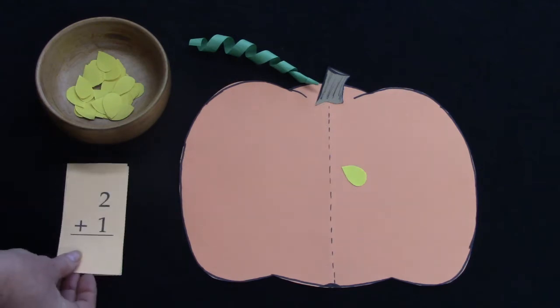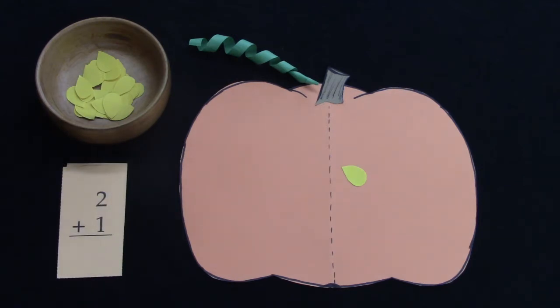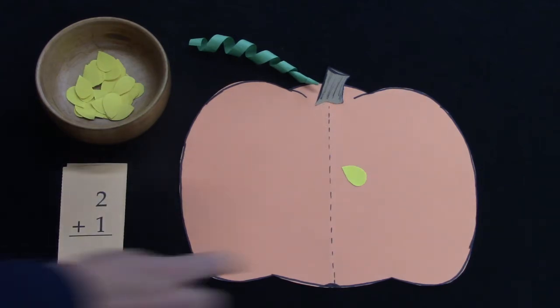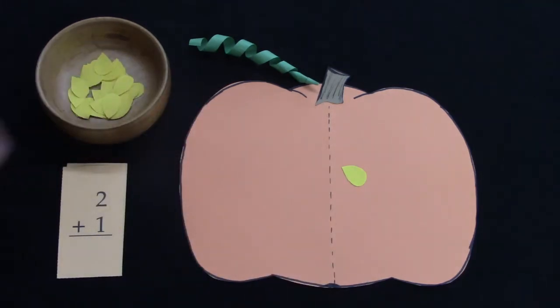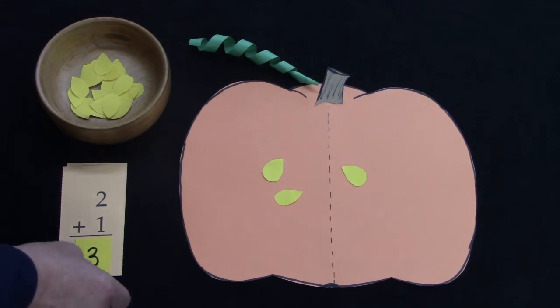What if we have two plus one? Well, I already have one on that side, so I would just need to put two on the other side. Two plus one is... you're right! It is three.